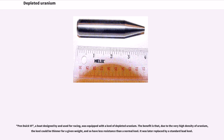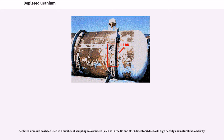Spenduic VI, a boat designed for racing, was equipped with a keel of depleted uranium. The benefit was that, due to the very high density of uranium, the keel could be thinner for a given weight, and so have less resistance than a normal keel. It was later replaced by a standard lead keel. Depleted uranium has also been used in a number of sampling calorimeters, such as in the D0 and Zeus detectors, due to its high density and natural radioactivity.